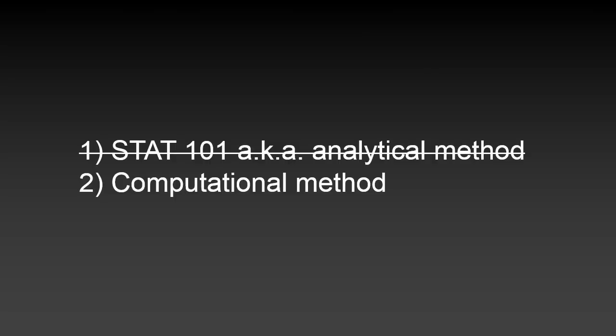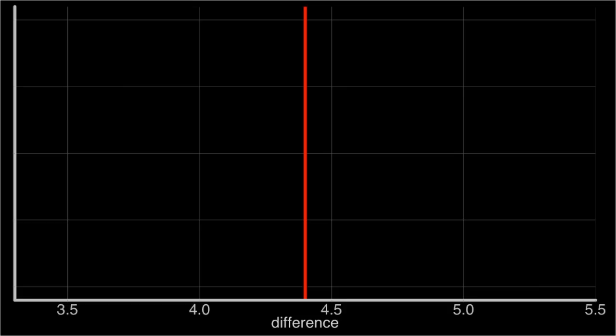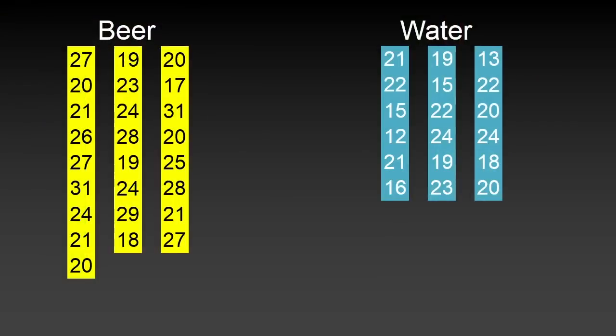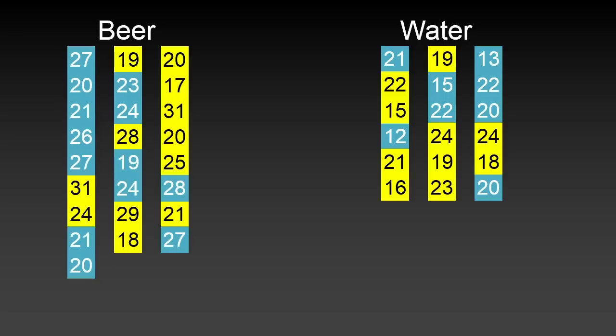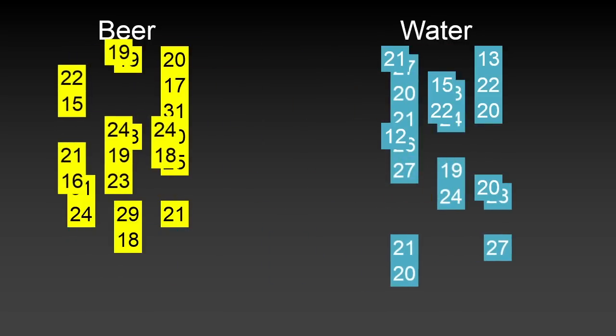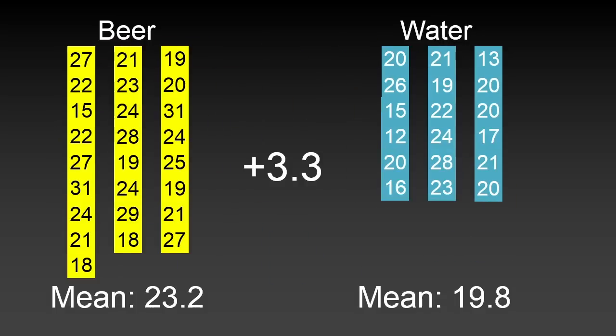So that was Stats 101, the analytical method. What about the computational method? Remember, the thing we're trying to figure out is whether this 4.4 is a large or a small difference — so we'll just mark that 4.4 on a plot. Here's our original data, color-coded to whether the subject drank beer or water. And now, if the skeptic is right, these labels have absolutely no meaning — they're completely meaningless, they carry no information. So what I can do is randomly shuffle them around, rearrange them, tidy them up, compute some new means, subtract the means, and get a new difference of 3.3 mosquitoes.